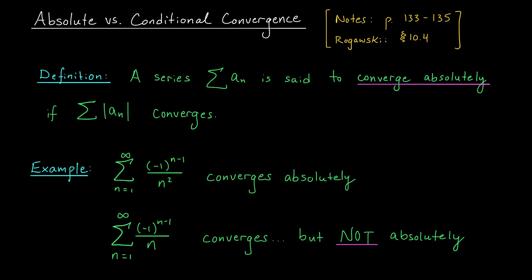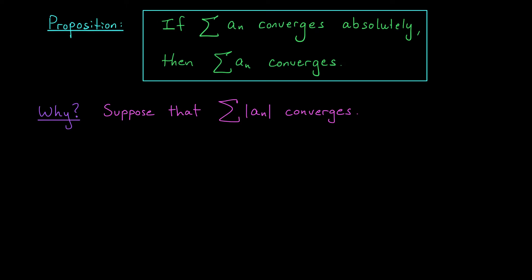Is it possible for a divergent series to converge absolutely? No. As you'll see in the next proposition, if a series converges absolutely, it must also be convergent. The proposition basically says that absolute convergence is a stronger form of convergence: if you have a series that converges absolutely, then it must also be convergent.